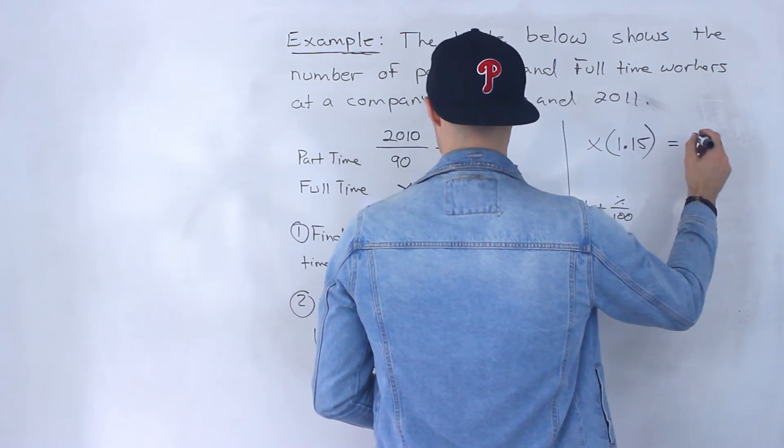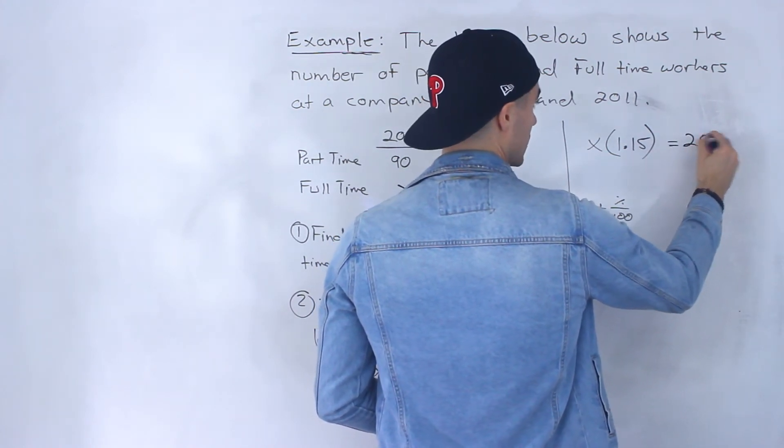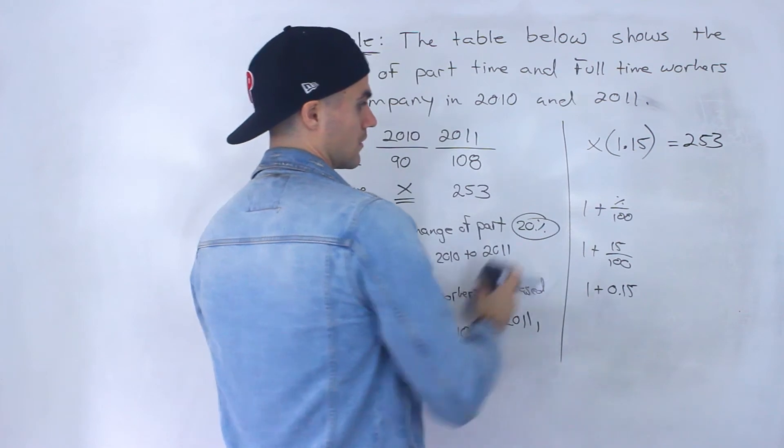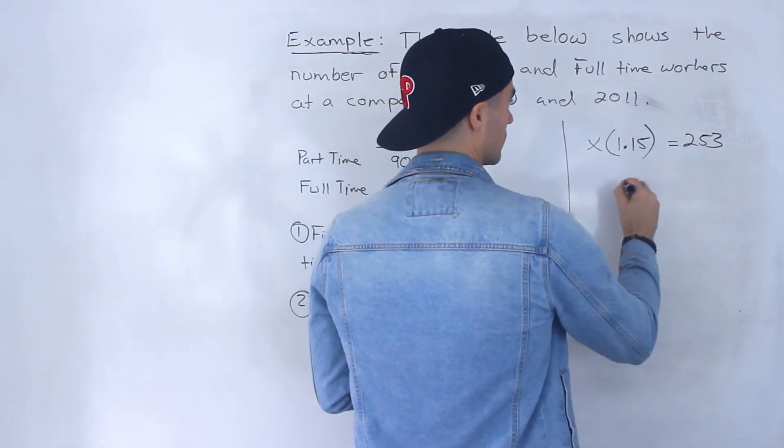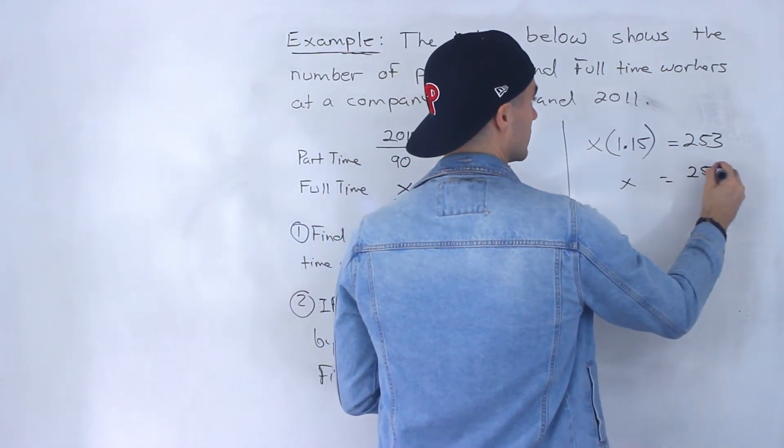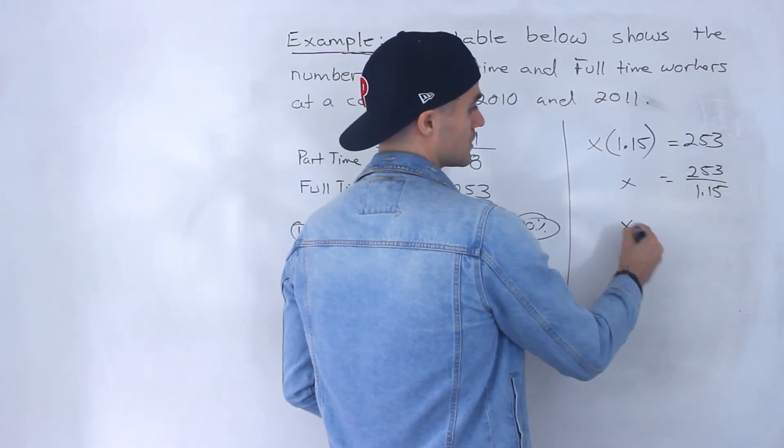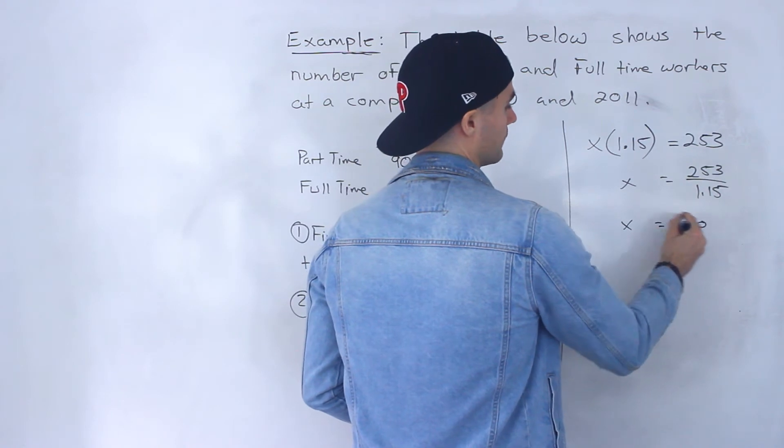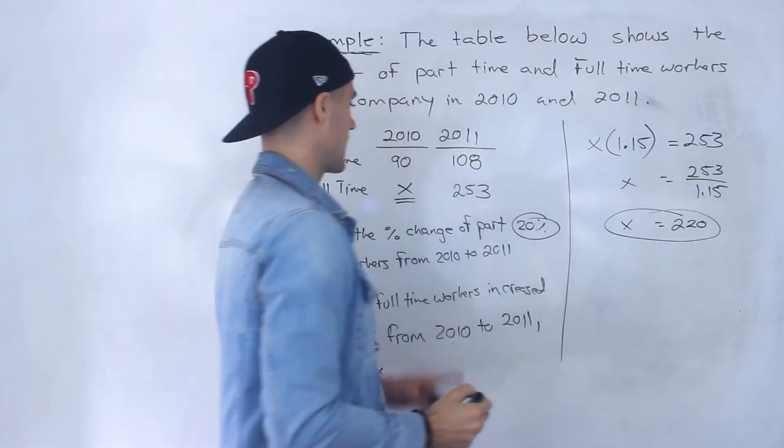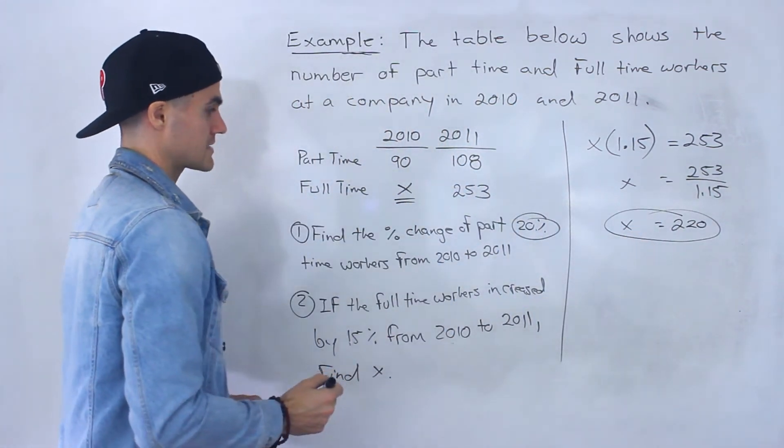So here what we would do is just divide this 253 by 1.15, and when you do this you'd end up getting 220. So that ends up being the answer, that's what x ends up being, that's the number of full-time workers in 2010.